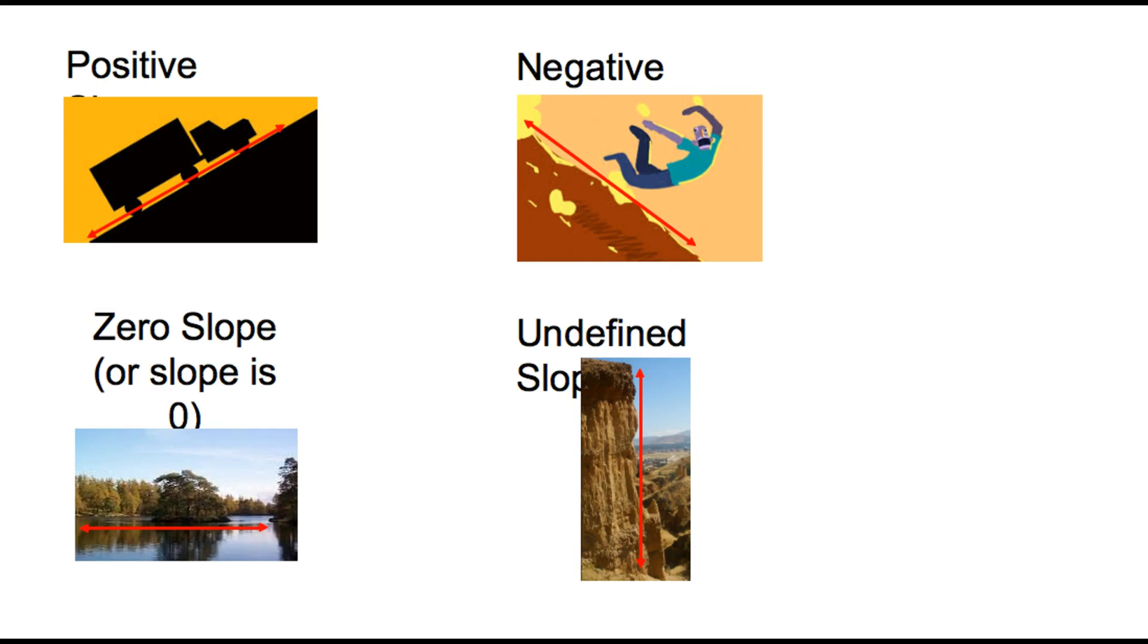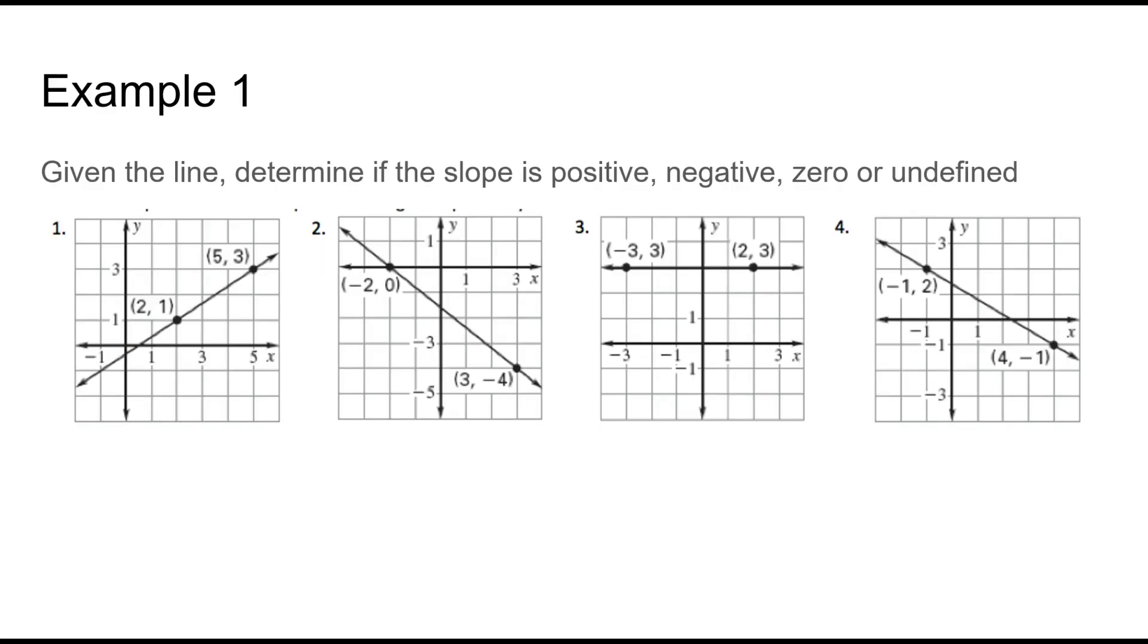Given the lines here we're going to determine if the slope is positive, negative, zero, or undefined. Remember that we're always going to read from left to right. We're always starting on this side of the graph. We're basically going to see where we get on at this point. I don't see anything, I don't see anything. Oh, there we go. And from here I'm going up. So this is positive.